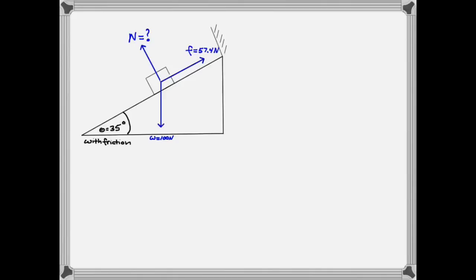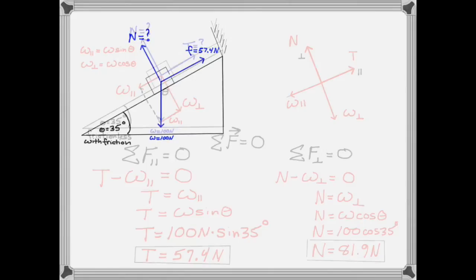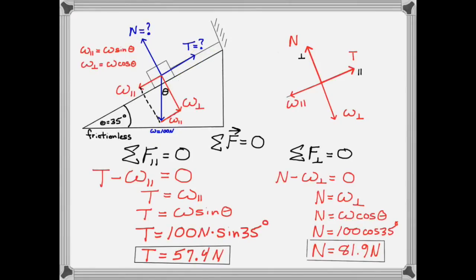If you said 57.4 newtons you were right. If you didn't get it, how would you have figured that out? Consider the original situation. The only difference is that the tension from the rope is being replaced by a friction force. So likewise on the component diagram we will replace the tension force with a friction force.